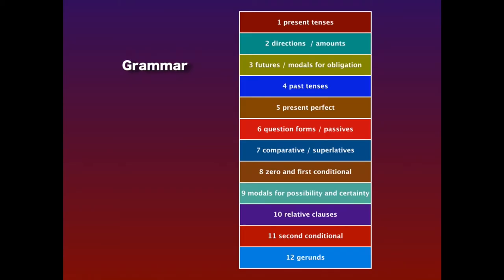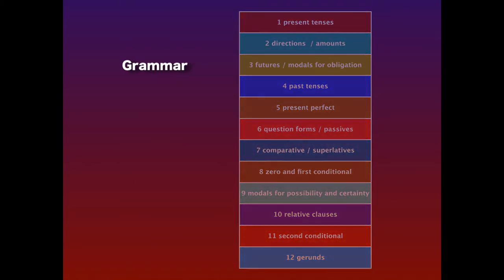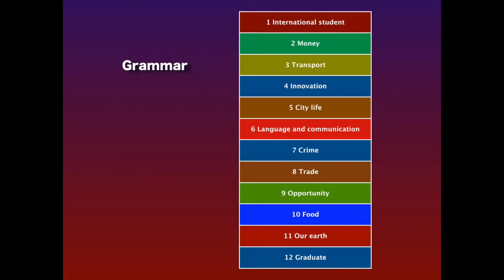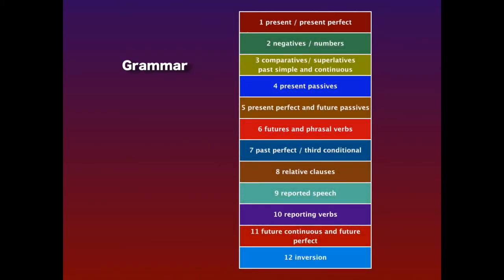Many teachers and schools will want to know about the grammar syllabus, and Achieve IELTS features a strong grammar syllabus. In level 1 we start off with the present tenses, go on to directions and amounts, move on to futures and past tenses, look at the present perfect, passives and question forms, comparatives and superlatives, conditionals, modals, relative clauses, and finish with the second conditional and gerunds.